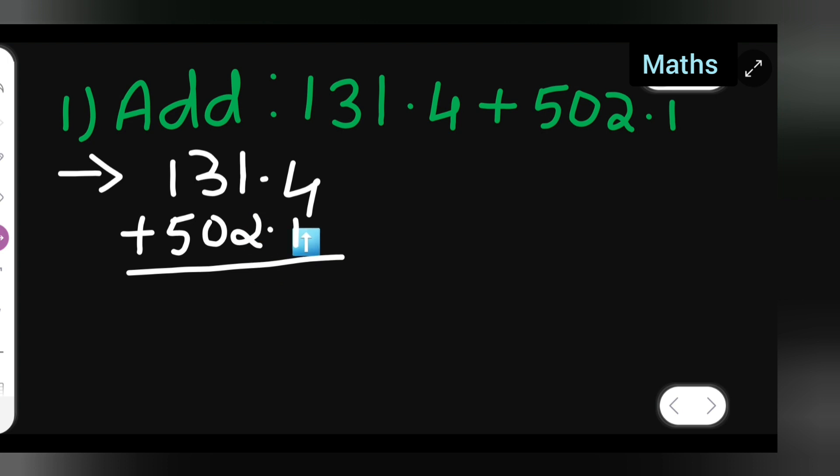Now, 4 plus 1 will give you 5. Then put the decimal point as it is. Then 2 plus 1 will give you 3, write 3. Next number will be again 3 plus 0, which will be 3 only.